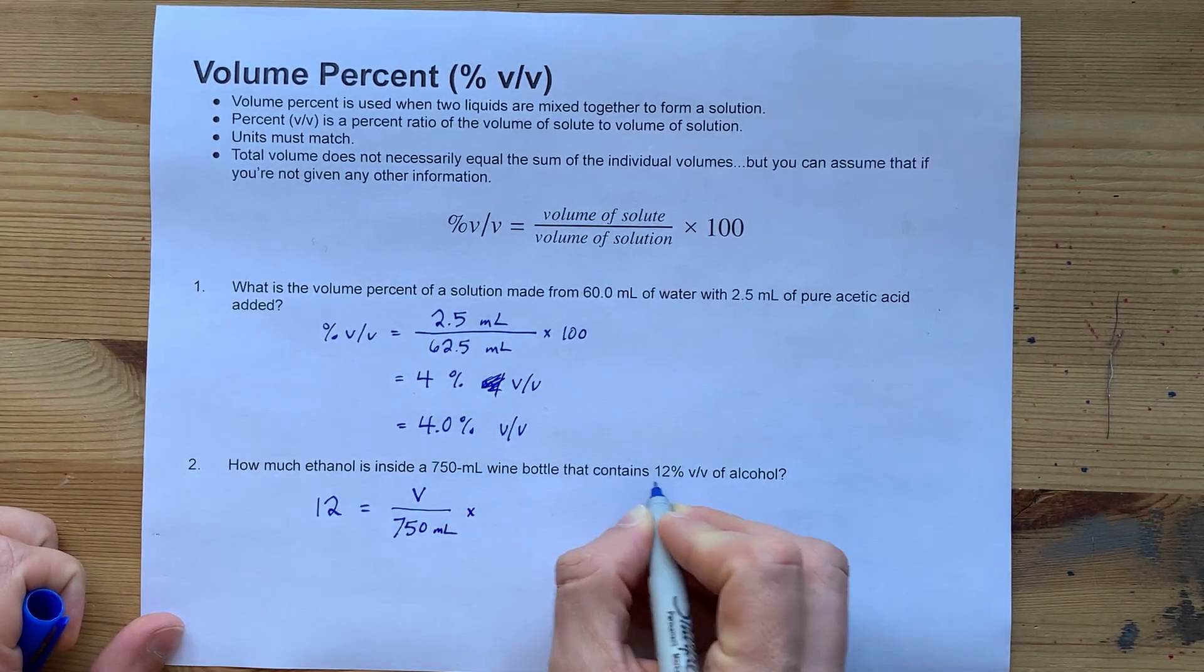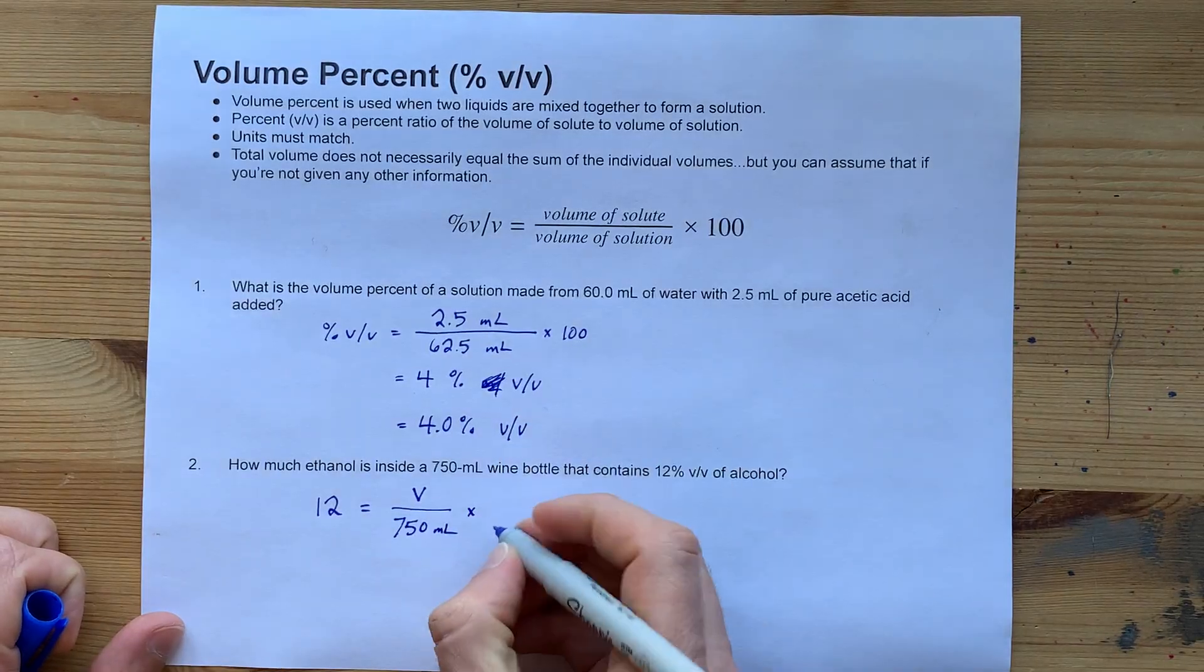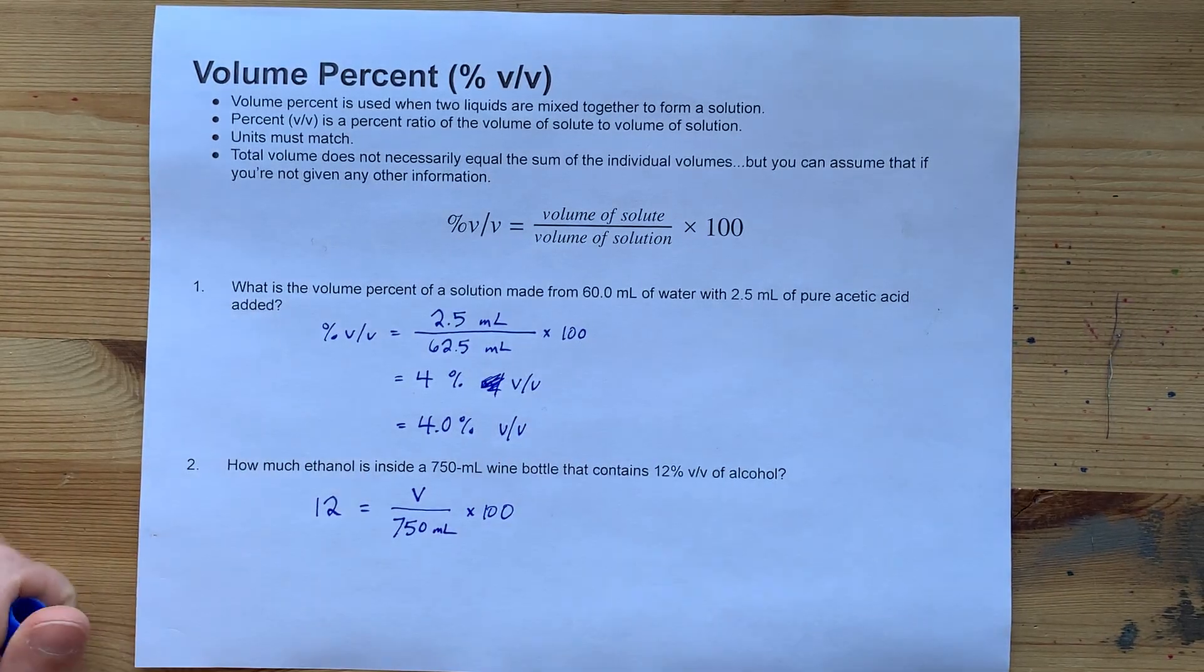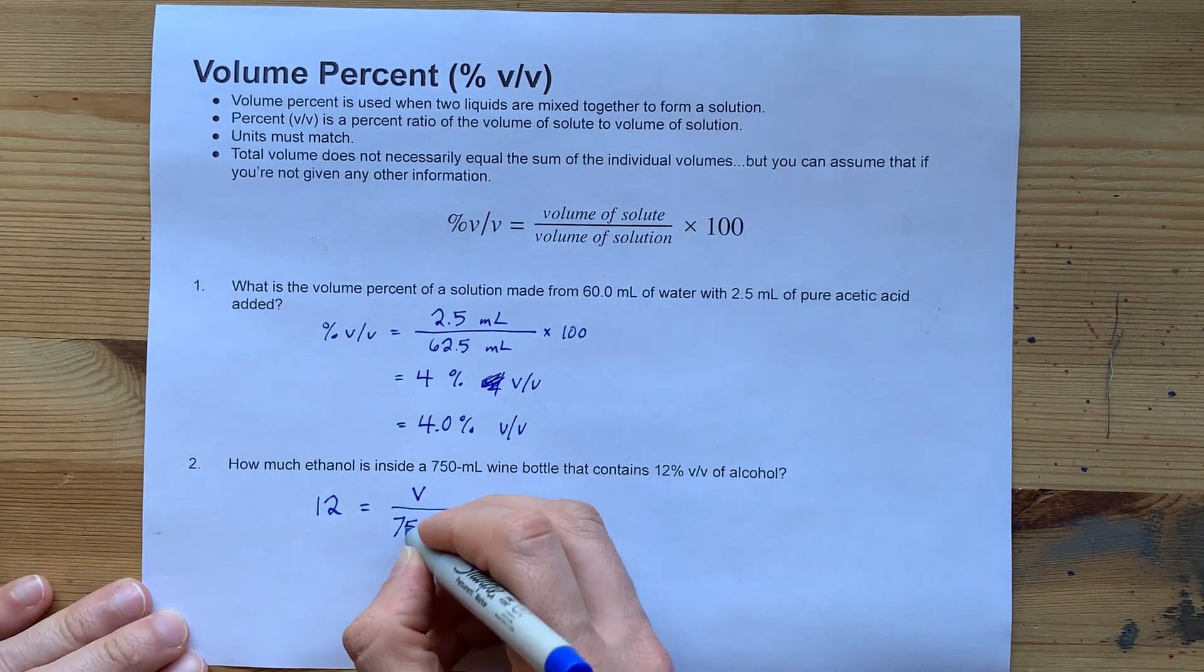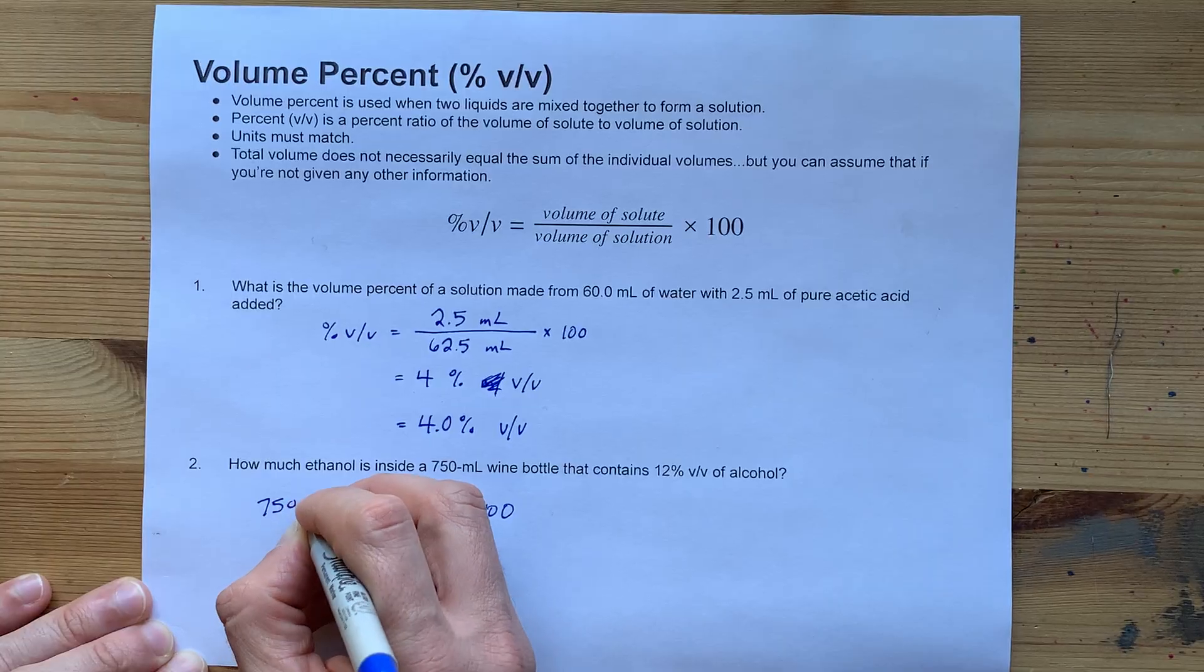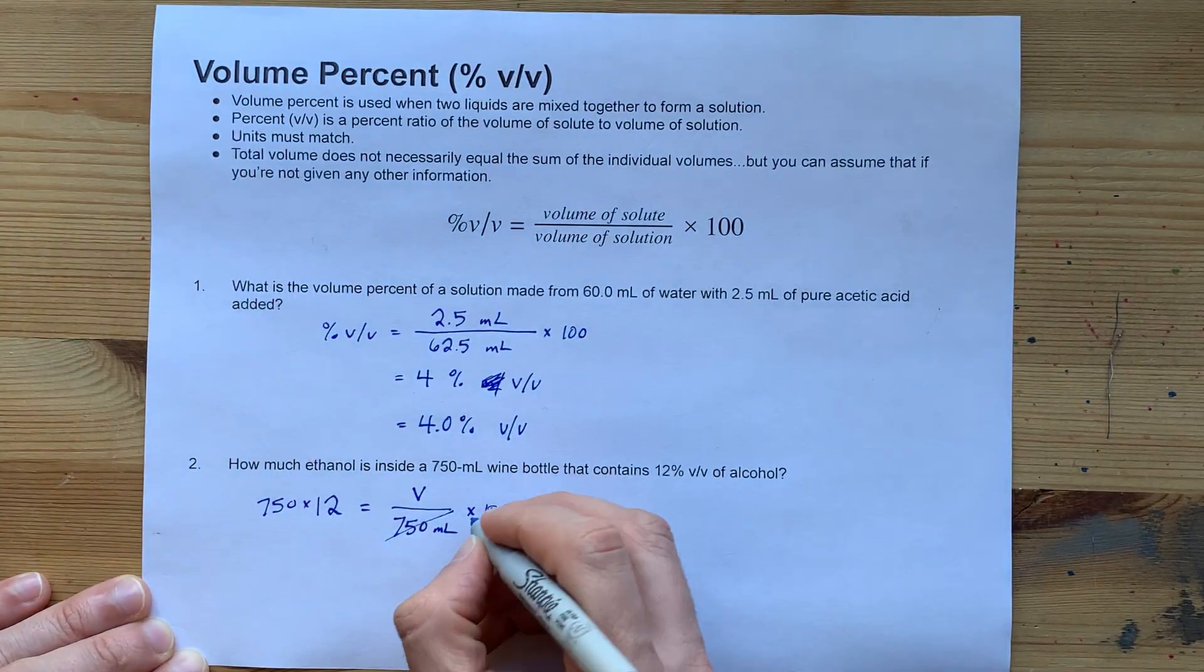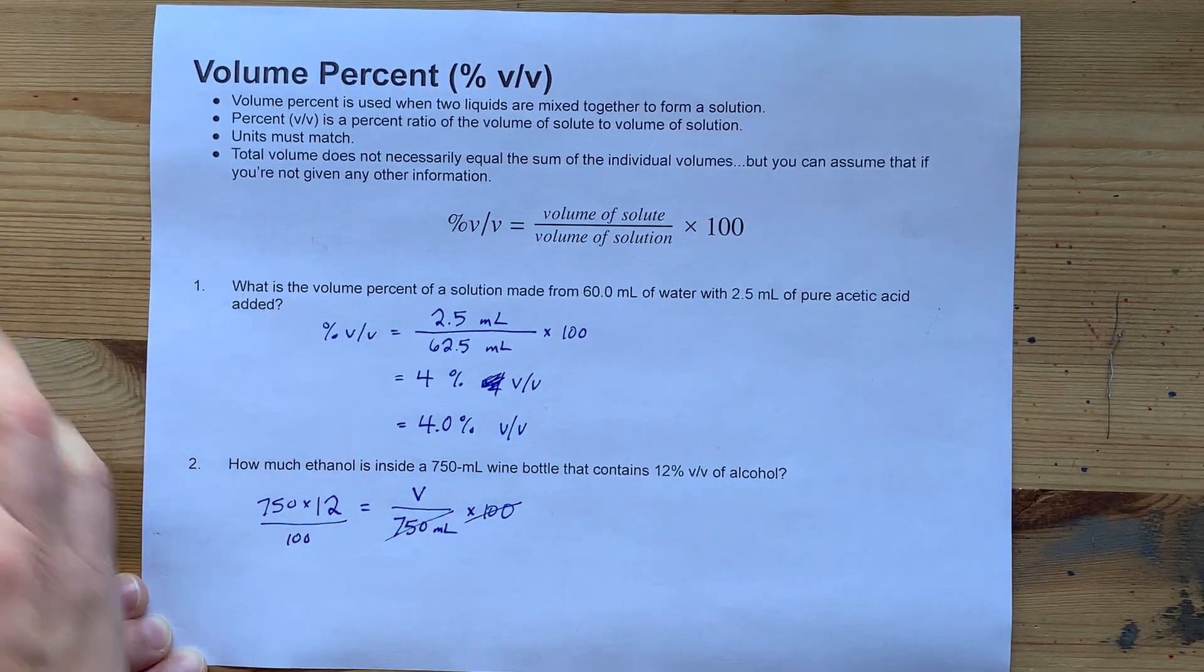Again, because this 12 is written as straight-up 12 and not 0.12, the decimal form, you'll have to write the times 100 there. To solve for this volume, you have to undo the division by 750. That's multiplication on the other side. And undo the multiplication by 100. That's dividing by 100 on the other side.